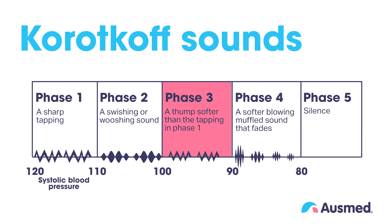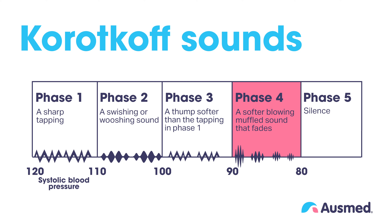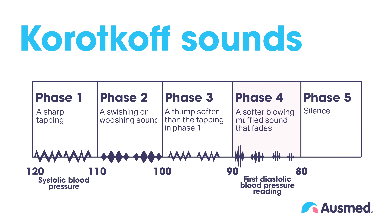Phase 3: Intense thumping sounds that are softer than phase 1 as the blood flows through the artery, but the cuff pressure is still inflated to occlude the flow during diastole. Phase 4: Softer and muffled sounds as the cuff pressure is released. The change from the thump of phase 3 to the muffled sound of phase 4 is known as the first diastolic reading.